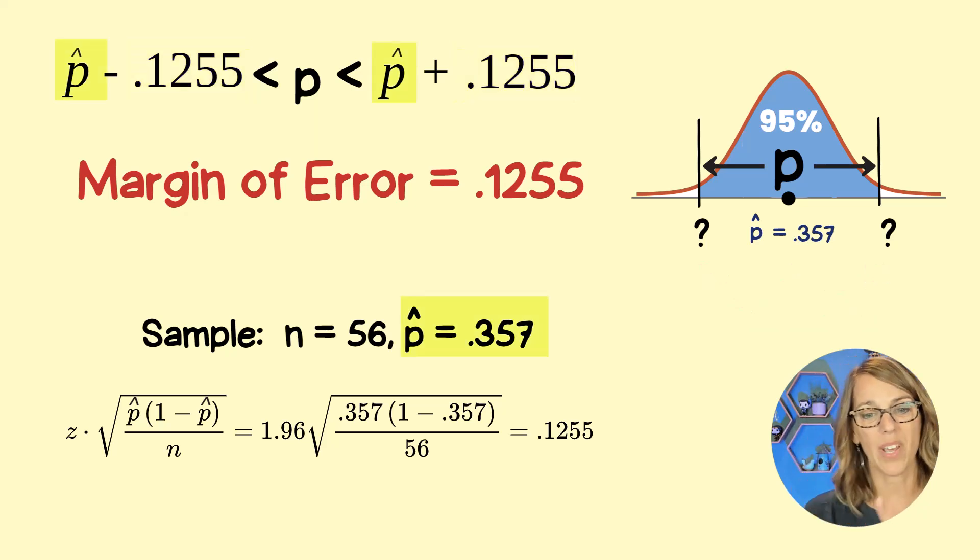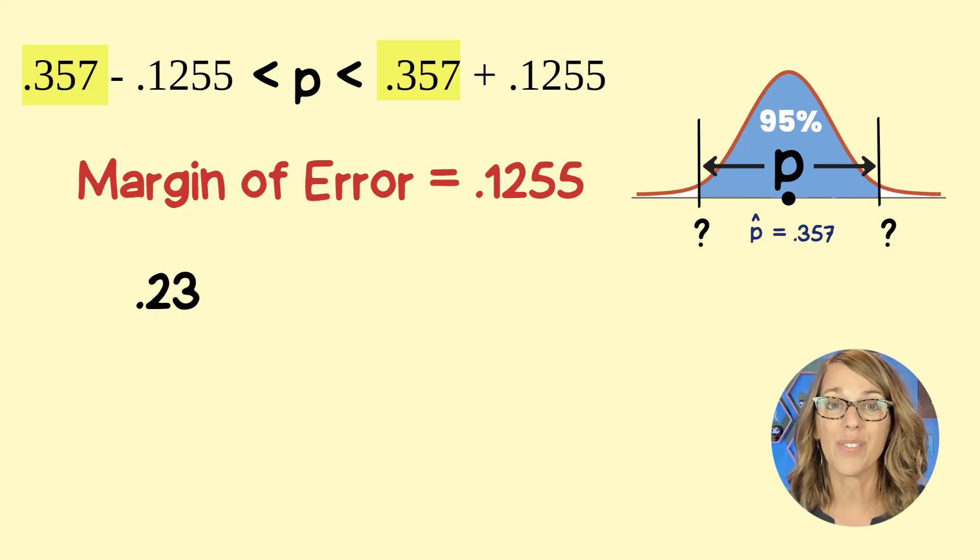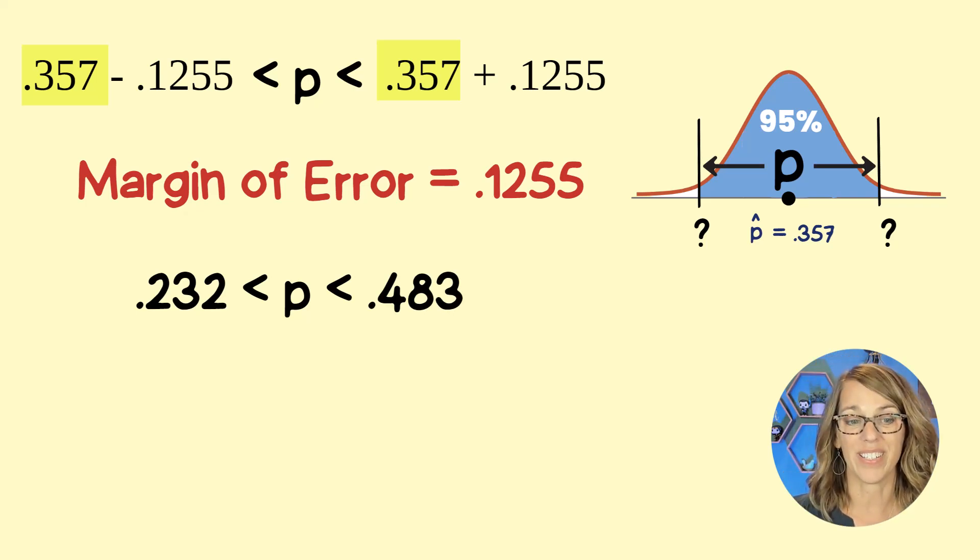P hat, remember, was that 0.357. That goes into the formula. And subtracting and adding those values, we've got our confidence interval.